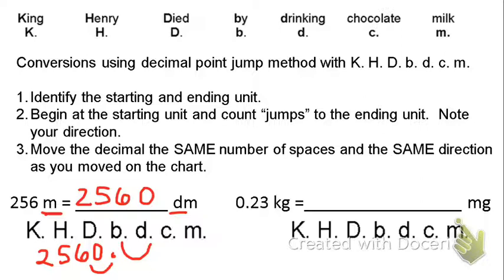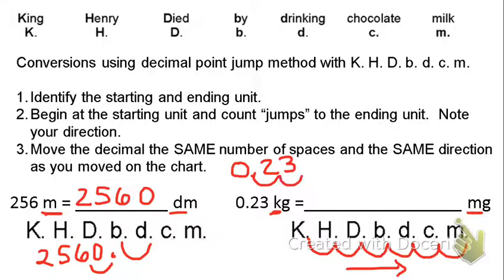Let's try the same thing with kilograms to milligrams. This time we're moving all the way from kilograms over to milli, so we're going to do 1, 2, 3, 4, 5, 6 jumps. So we need to jump the same direction with 0.23. So 1, 2, 3, 4, 5, 6. Drop in the decimal point.